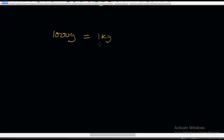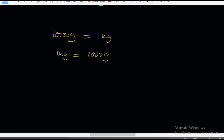Now let's reverse it. That means we will say 1 kilogram is equal to 1,000 grams — it's the same thing, just reversed. 1 kilogram is equal to 1,000 grams.